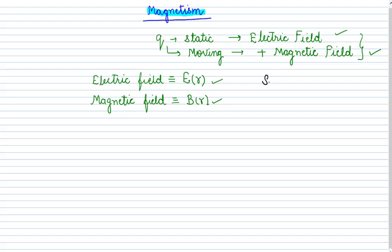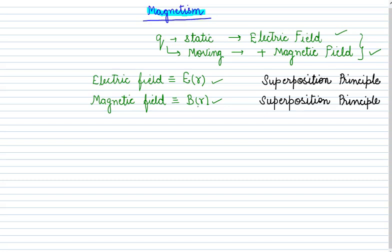Electric field follows the principle of superposition. If you want to know how electric field follows this principle, you can refer to our lecture - the link is given below. Similarly, as electric field follows the superposition principle, the magnetic field also follows the superposition principle. This means that if you have a magnetic field due to a number of components, the total magnetic field is the vector sum of all those independent values. That is known as the principle of superposition.